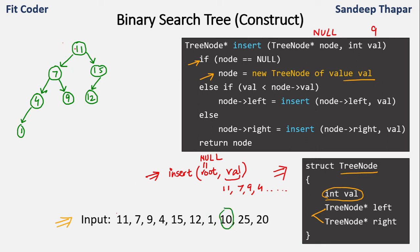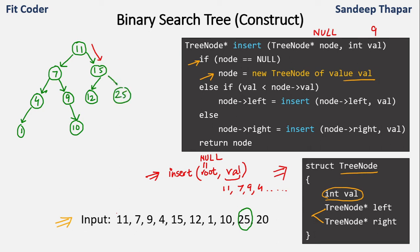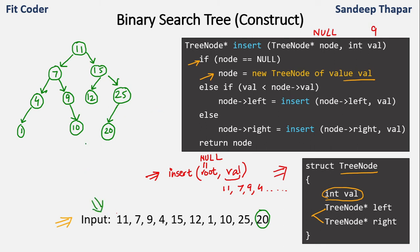Value 10: less than 11, greater than 7, greater than 9, so it becomes the right child of 9. Value 25: greater than 11, greater than 15, so it becomes the right child of 15. Value 20: greater than 11, greater than 15, less than 25, so it becomes the left child of 25. This completes our binary search tree.